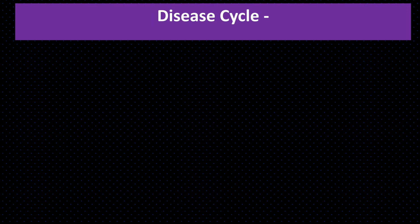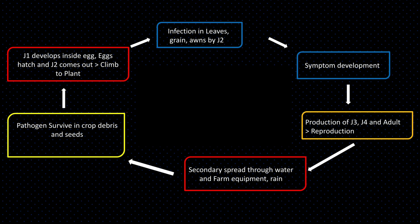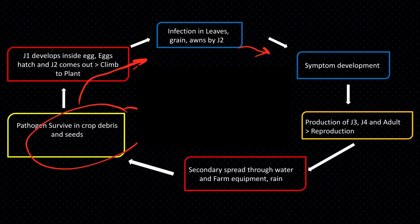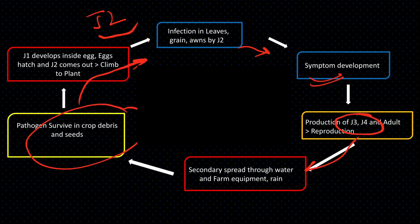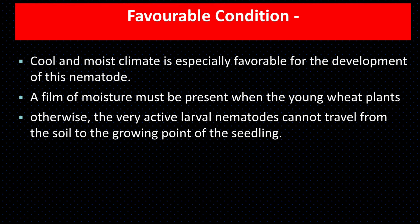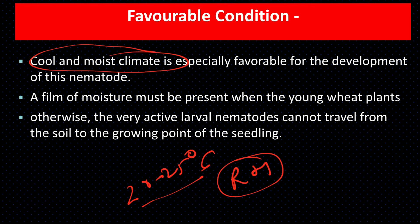Disease cycle: Pathogen survives in crop debris and seeds. J1 develops inside seed; J2 hatches and climbs plant causing infection (key exam point: J2 causes infection). Symptoms appear; J2 enters plant, forms J3 and J4; J4 develops into adults; mating produces eggs; eggs survive in galls. Favorable conditions: 22–25°C temperature, high relative humidity, cool and moist climate, presence of moisture on leaves.